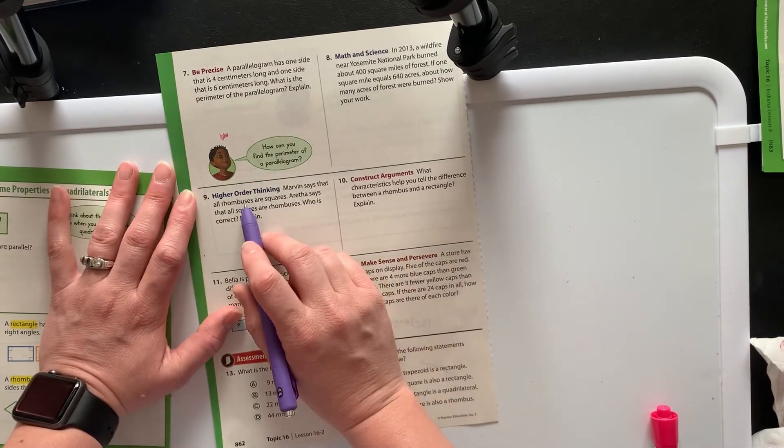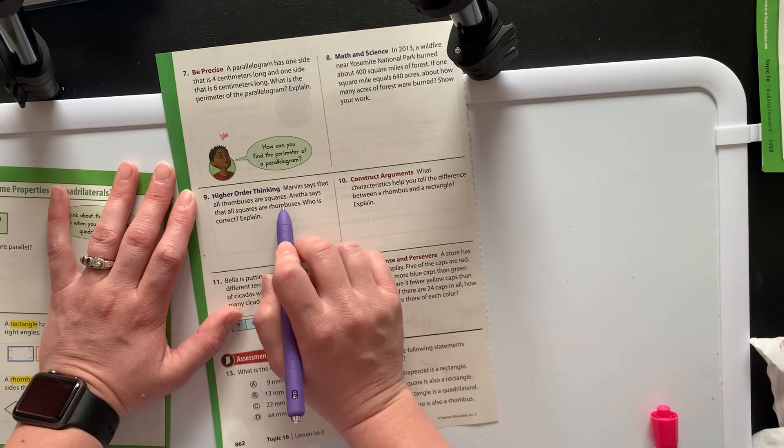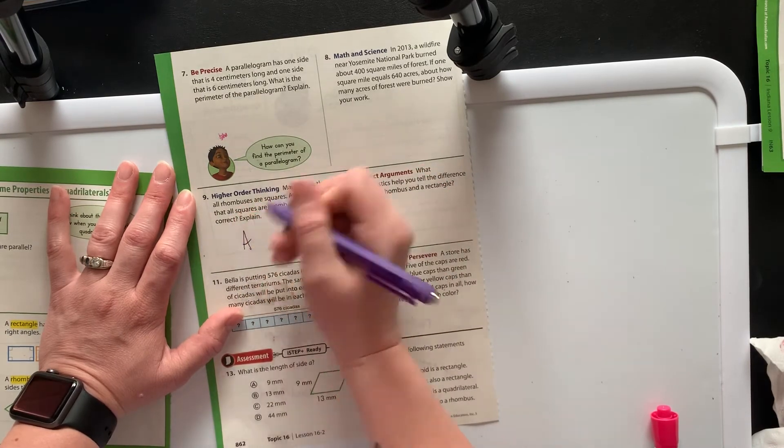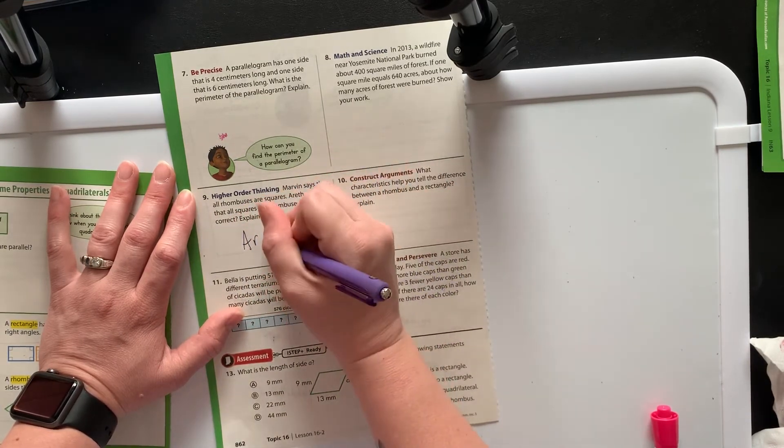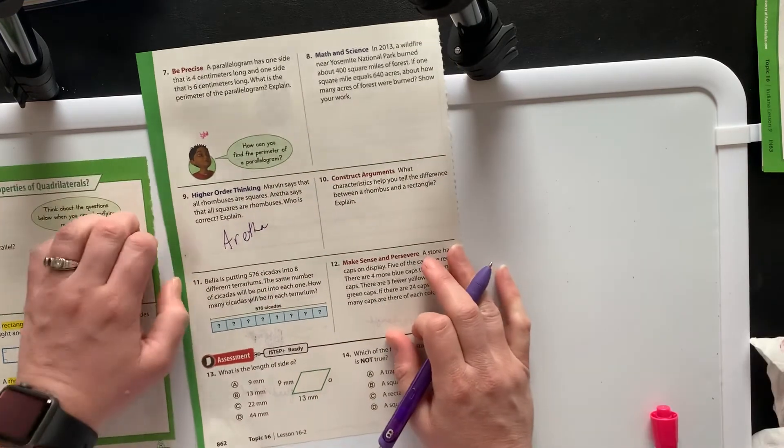So is it that all rhombuses are squares or all squares are rhombuses? Here it's going to be the second one. Erythra is going to be the one that is correct.